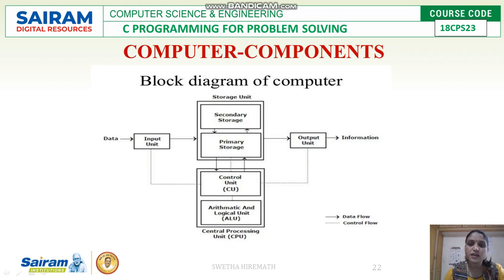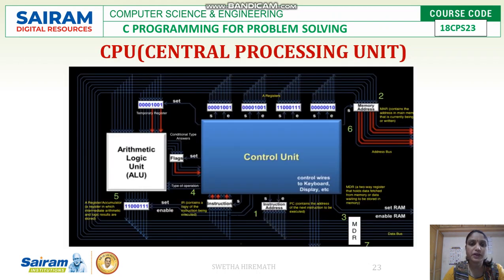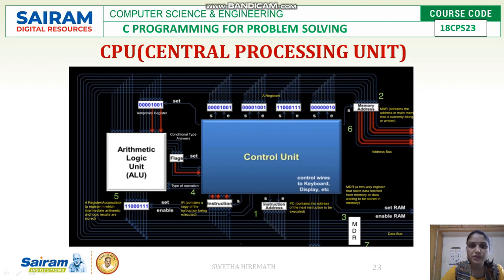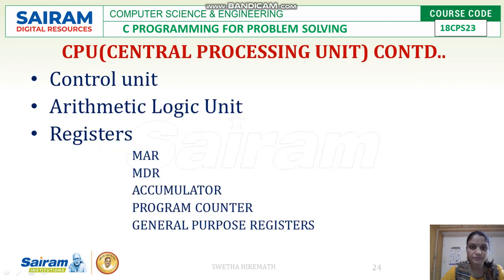Here we can see the ALU — arithmetic and logic unit — the control unit, and the memory units where data is received and stored. Coming to the central processing unit, it has three units: the control unit, the arithmetic and logic unit, and also registers.